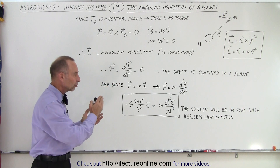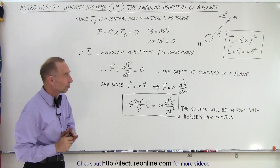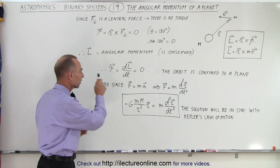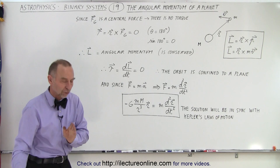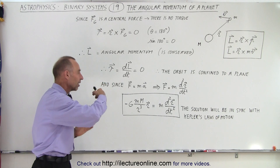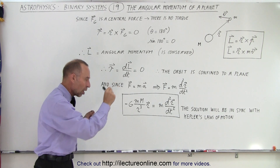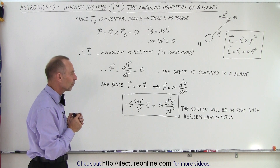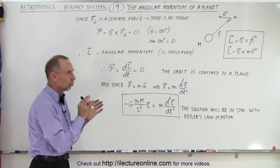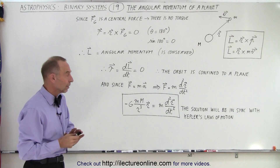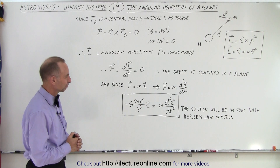We'll take a closer look at that differential equation and see what type of solutions we can get. Now you can see the relationship: the central force of gravity produces zero torque, therefore there is no change in angular momentum — it is conserved — and therefore the orbit is confined to a plane. We define the gravitational force as equal to ma, and we'll also look at how the velocity changes in the orbit according to Kepler's laws, and see how that all comes out of the solution of that differential equation. Stay tuned for more.